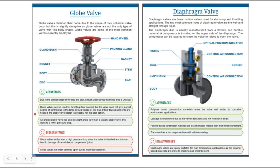Globe valves can be used for throttling as well, but the valve does not give a great degree of control due to the large circular shape of the disc. If fine flow adjustments are needed, the globe valve design is probably not the best option. An angled globe valve has one less right angle turn than a straight globe valve, which leads to a lower pressure drop, giving the angled globe valve a slight advantage over the straight globe valve.